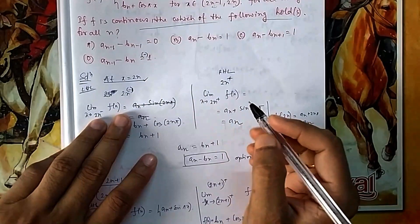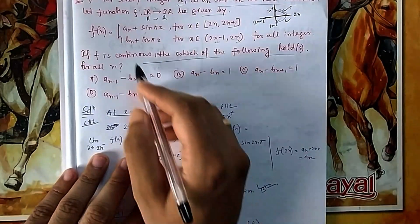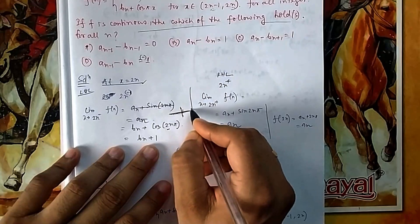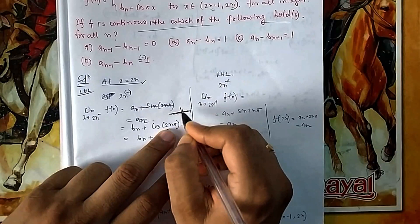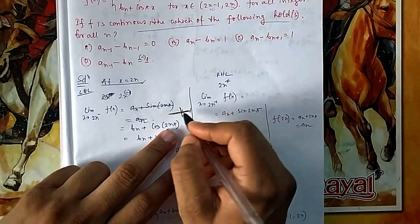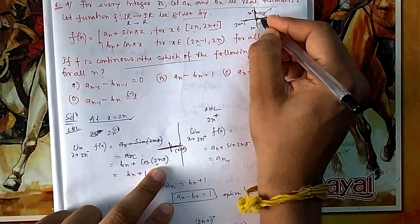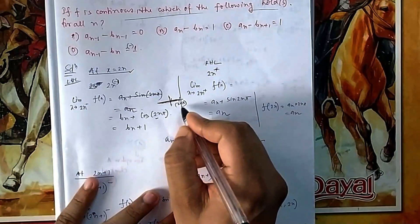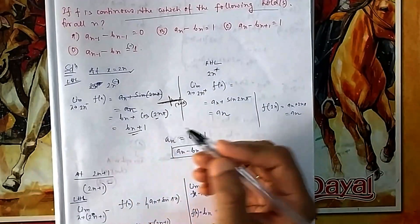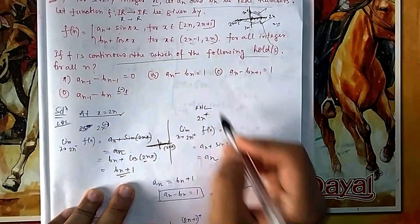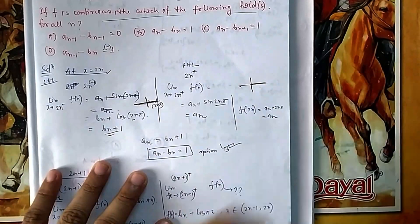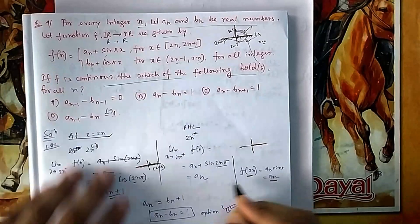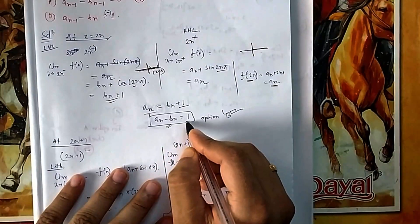At x = 2n: the left-hand limit (LHL) uses the second piece, giving cos(2nπ). Since 2nπ is an even multiple of π, cos(2nπ) = 1, so LHL = bₙ + 1. The right-hand limit (RHL) uses the first piece, giving sin(2nπ) = 0, so RHL = aₙ. The function value at 2n also equals aₙ. For continuity, all three must be equal, which gives us a relation — so option b is correct.